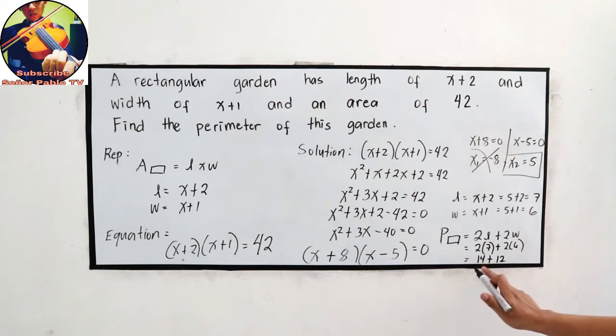So add, 14 plus 12, that is equal to 26. So our perimeter, for the final answer, perimeter is 26 units.